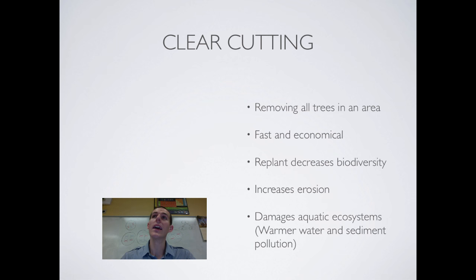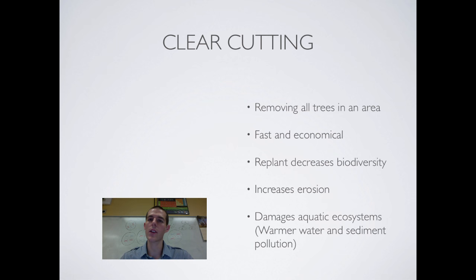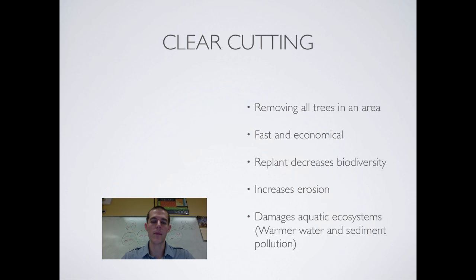Clear-cutting is one you'll probably hear the most about in AP Environmental because it's the hardest on the land. Basically, clear-cutting means going in with machines and chainsaws, cutting everything down flat to the ground. The reason it's typically done is because it's fast and economical — you build a road in, take your machines, cut everything in sight, and haul it all out.